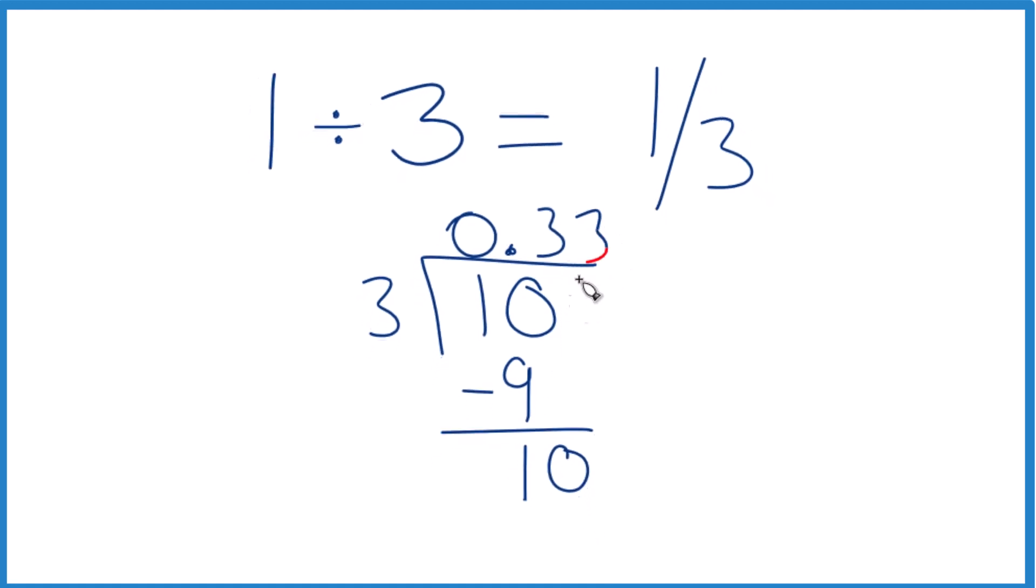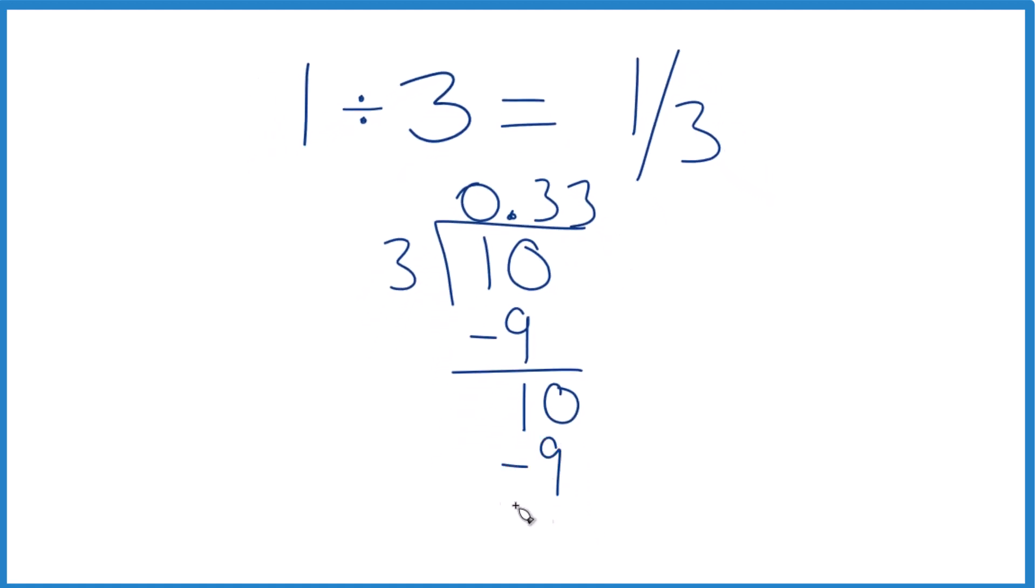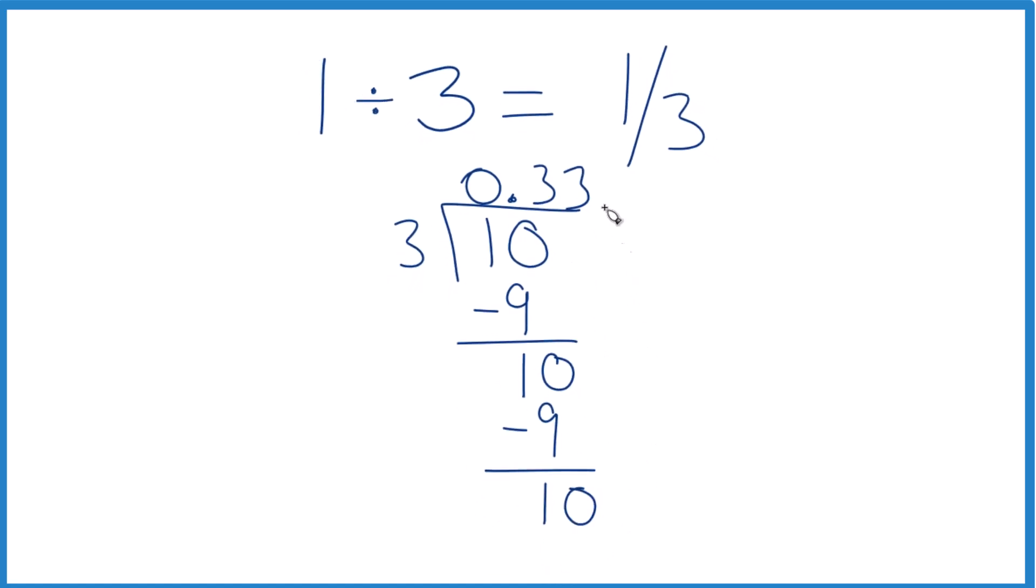Well, 3 times 3 is 9. If we subtract, we get 1. It doesn't go into 1, but if we call that 10 and move over 1, 3 times 3, and you get the point, right? We just keep going.